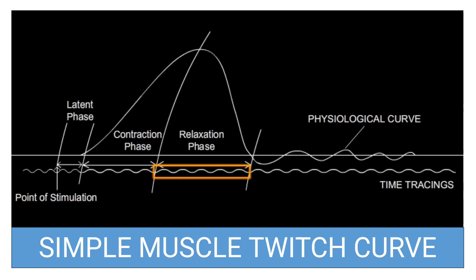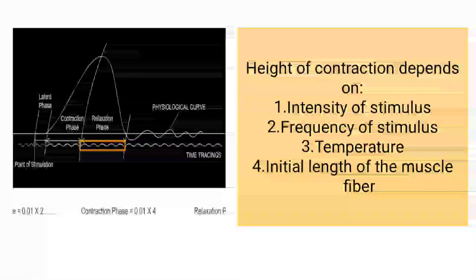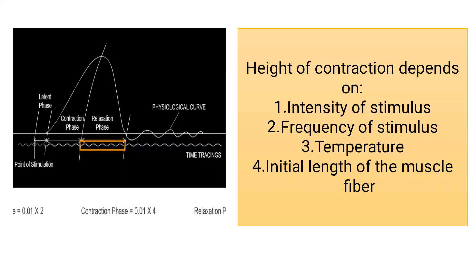After the latent phase we have the contraction phase, the relaxation phase, and the height of contraction — or the force of contraction. What are the factors that regulate this force of contraction? Four factors are responsible for the change in height of contraction. Height of contraction will depend upon the intensity of stimulus — if we increase the intensity, the height of contraction will increase. If we increase the frequency of stimulus while keeping all other factors constant, the height of contraction will also increase. It also depends upon temperature — if the temperature of the setup is increased, there will be increased force of contraction. And the initial length of the muscle fiber — if it is increased and the muscle is in a more preloaded condition, there will be more force of contraction.